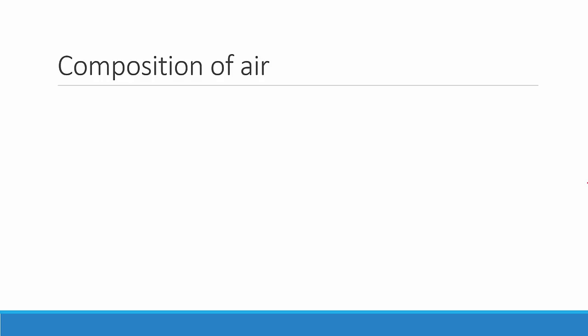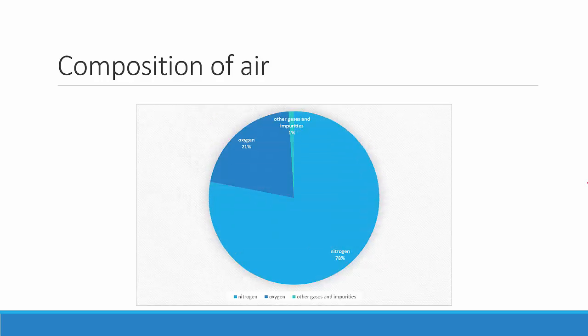Now let's see the composition of air — all the components that air is made up of. Nitrogen occupies the maximum concentration: about 78% of the air is composed of nitrogen. Oxygen, the gas that we breathe, occupies only about 21%. The rest 1% is composed of all other gases and impurities such as argon, carbon dioxide, dust, smoke, and other pollutants present in the atmosphere. Interestingly, in this 1%, only 0.03% of it is carbon dioxide.